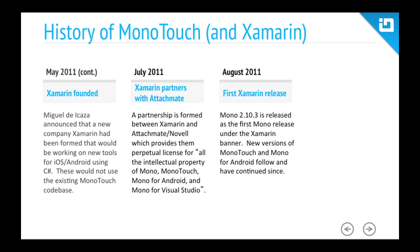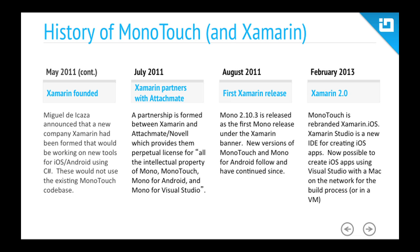In August 2011, Mono 2.10.3 was released along with MonoTouch and Mono for Android releases — the first releases for Xamarin. That brings us to today, where MonoTouch is rebranded as Xamarin.iOS, with a brand new IDE called Xamarin Studio. It's now also possible to create iOS apps using Visual Studio, as long as there's a Mac on the network for the build process, or if the Mac running Visual Studio is inside a virtual machine.